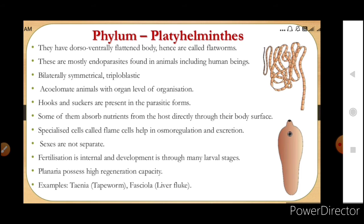Examples are Taenia (the tapeworm, which looks like a tape) and Fasciola (the liver fluke). The diagram shown here is of the liver fluke.